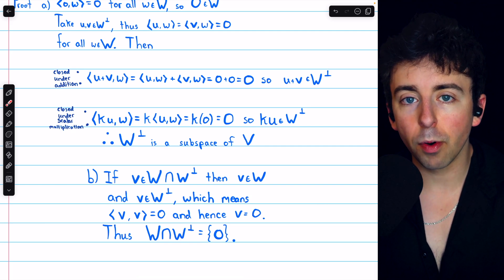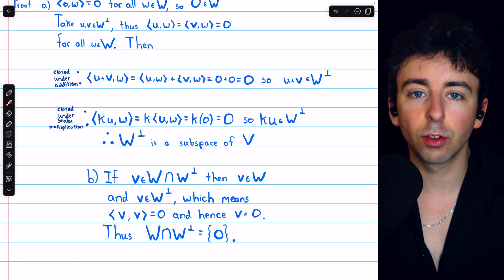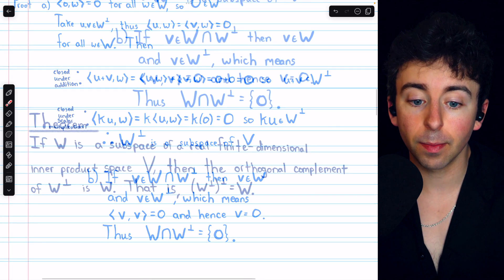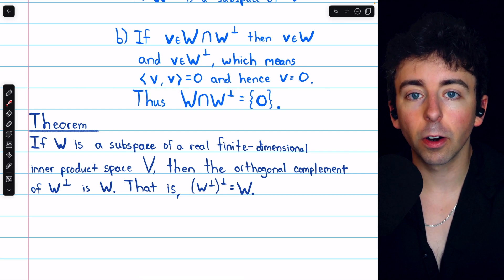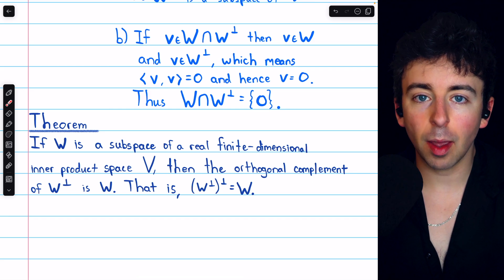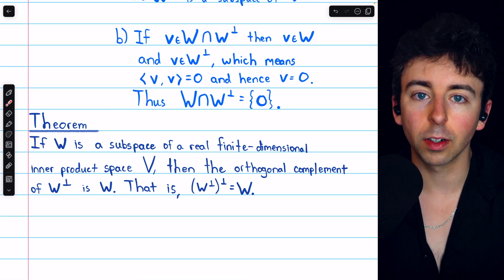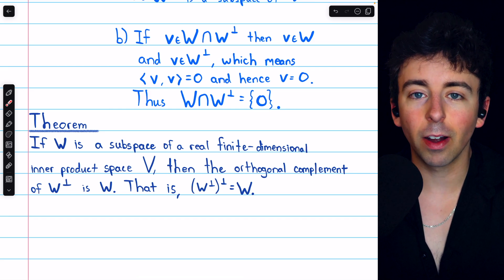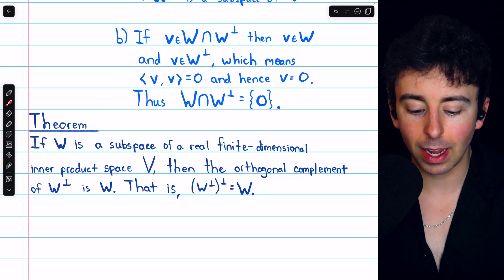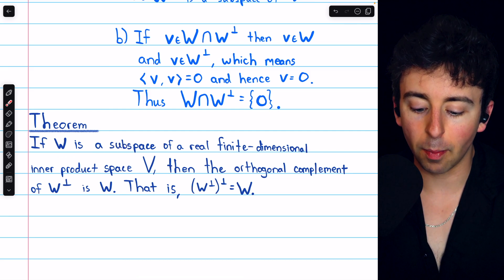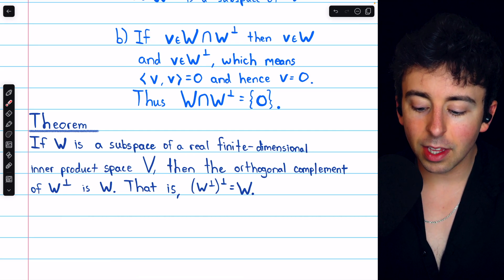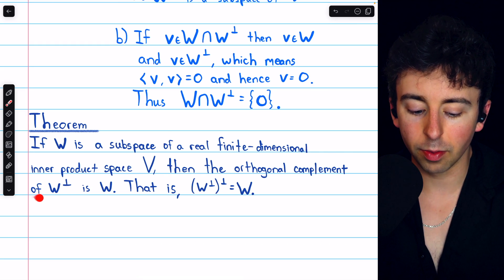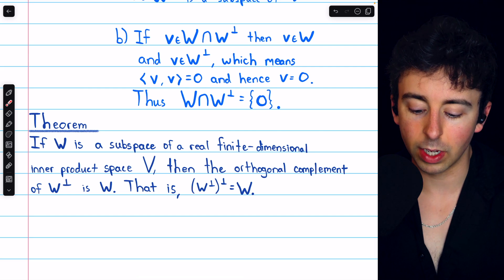Now we'll look at one more property that we're not going to prove today — I'll leave a link in the description to a lesson where we do prove it. This result tells us that orthogonal complements occur in pairs: if W is a subspace of a real finite-dimensional inner product space V, then the orthogonal complement of the orthogonal complement of W is just W itself, written (W⊥)⊥ = W.